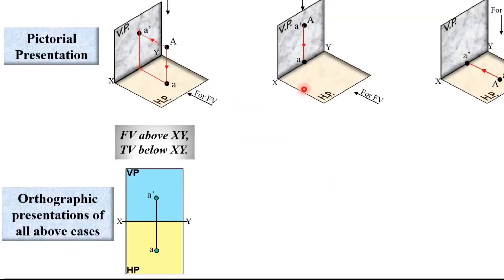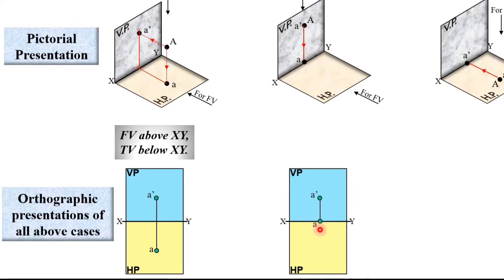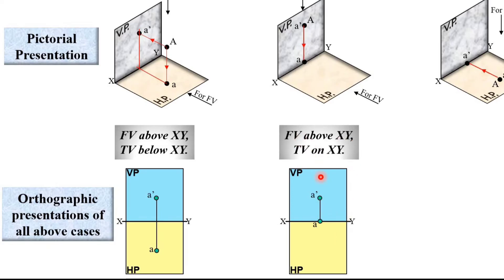Can you imagine what the orthographic presentation for Case 2 should be — is A dash above or below the XY line? Yes, absolutely right: A dash is above the XY line. Here you can see A dash is above the XY line, and A point is exactly on the XY line. Keep in mind that A dash and A must be on a straight vertical line — it should not be an inclined line. So the front view is above the XY line and the top view is exactly on the XY line.